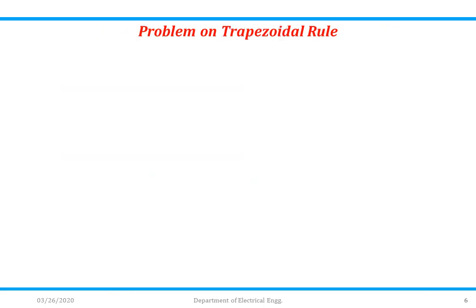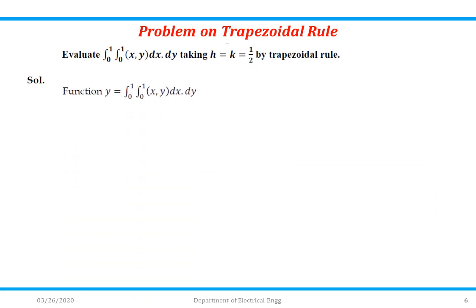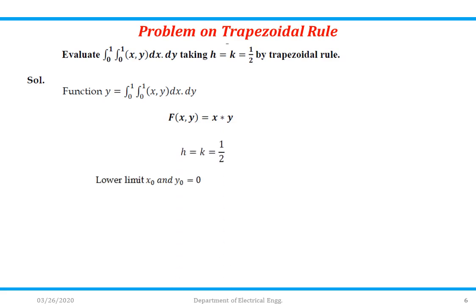Let's discuss a problem. Evaluate ∫(0 to 1) ∫(0 to 1) xy dx dy, taking h = k = 1/2, by the trapezoidal rule. The given function f(x,y) = x × y. Comparing with the standard form, f(x,y) is x into y. h and k are both given as 1/2.